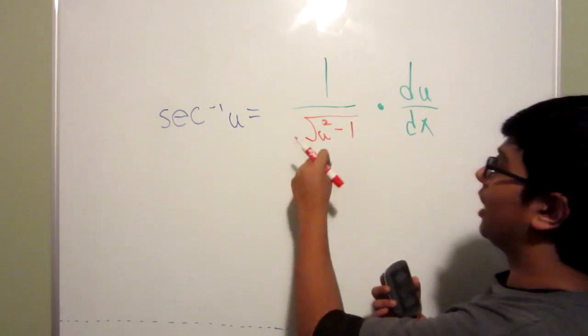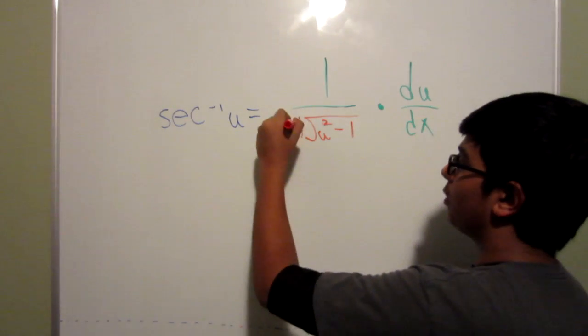It flips around the numbers, so then you now have u squared minus 1, and then you just add the absolute value of u on the outside.